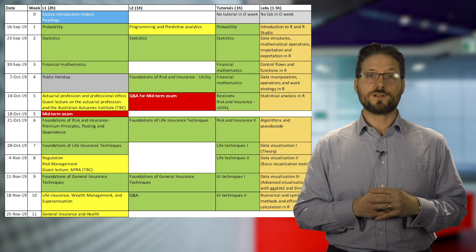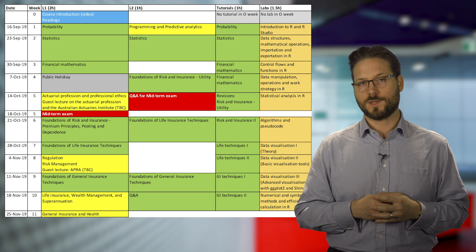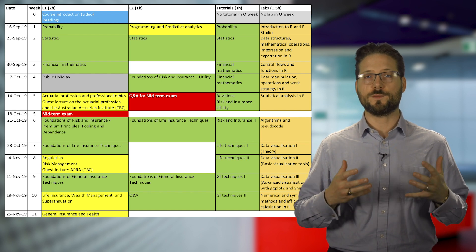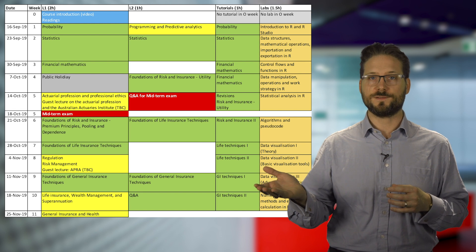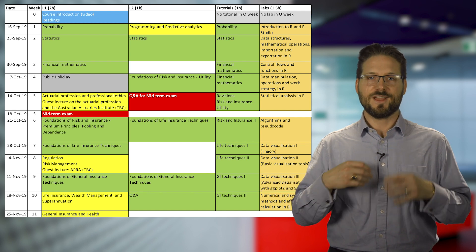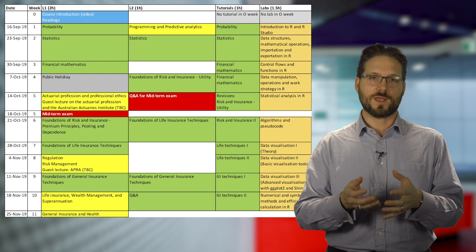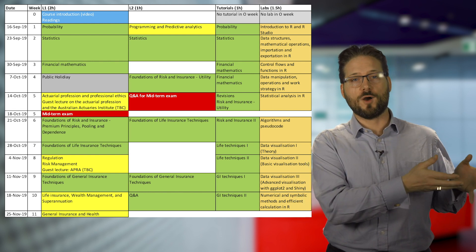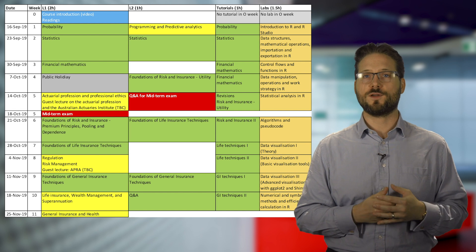The course structure can be observed from the course map next to me. The color coding has the following meaning: green bits are actuarial techniques, mostly maths; yellow bits are about the practice areas, mostly words; and orange bits are about the R labs, mostly code.